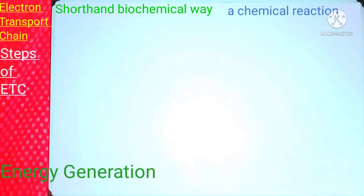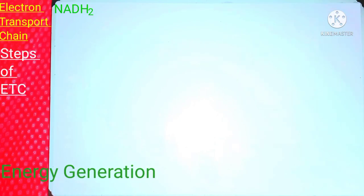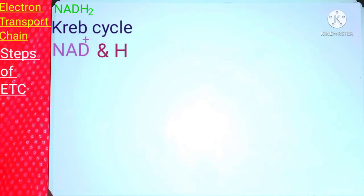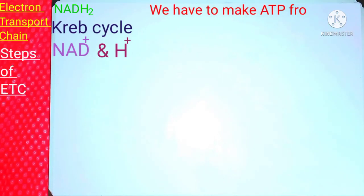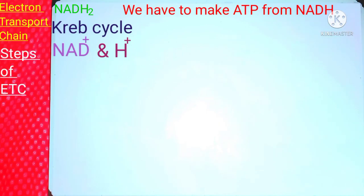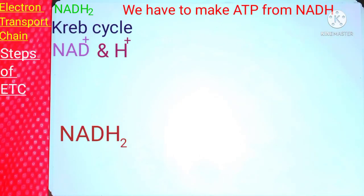Now let's come towards the steps of the electron transport chain — how we will produce ATP from ETC. Basically it is a very simple process during which NADH2 comes into function, formed during the Krebs cycle by the combination of NAD ion and hydrogen ion. The main job of NADH2 is to transfer hydrogen ions to the respiratory chain, from which we withdraw electrons.